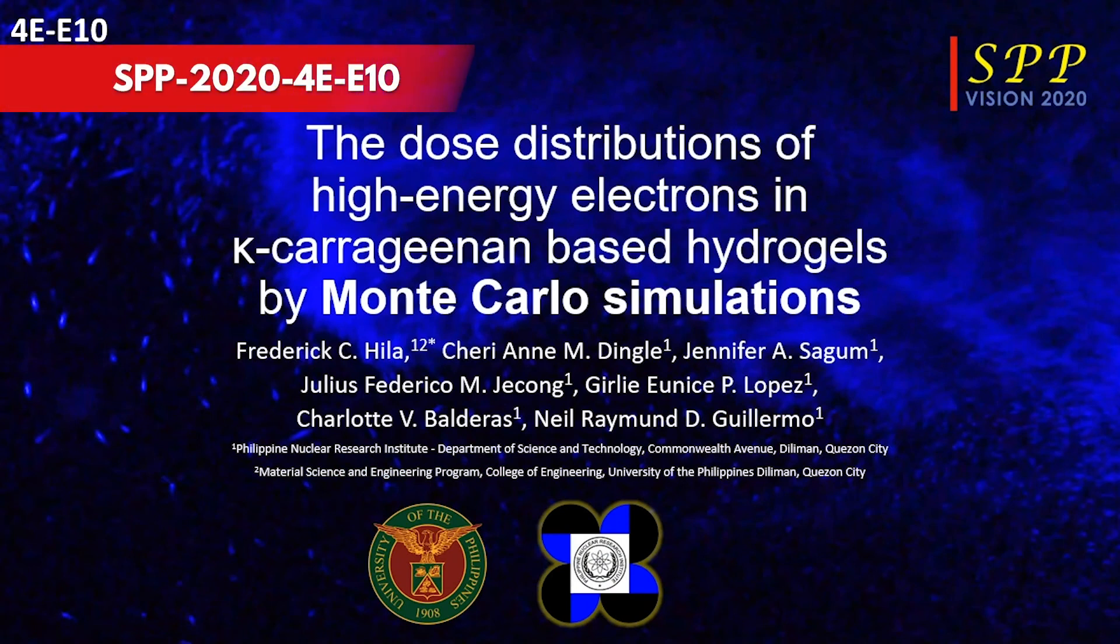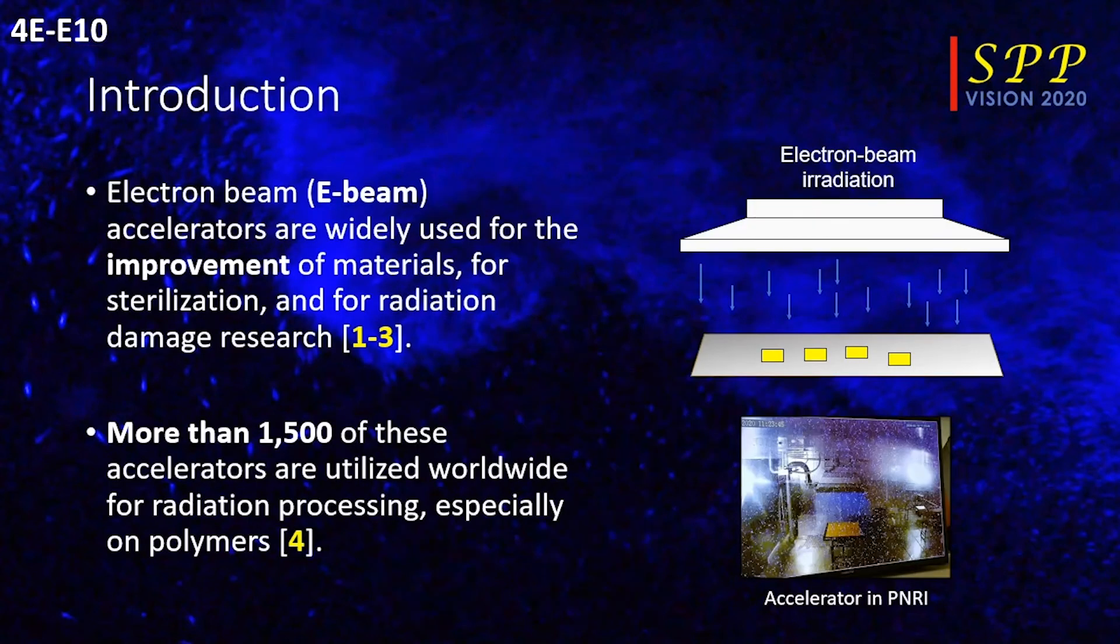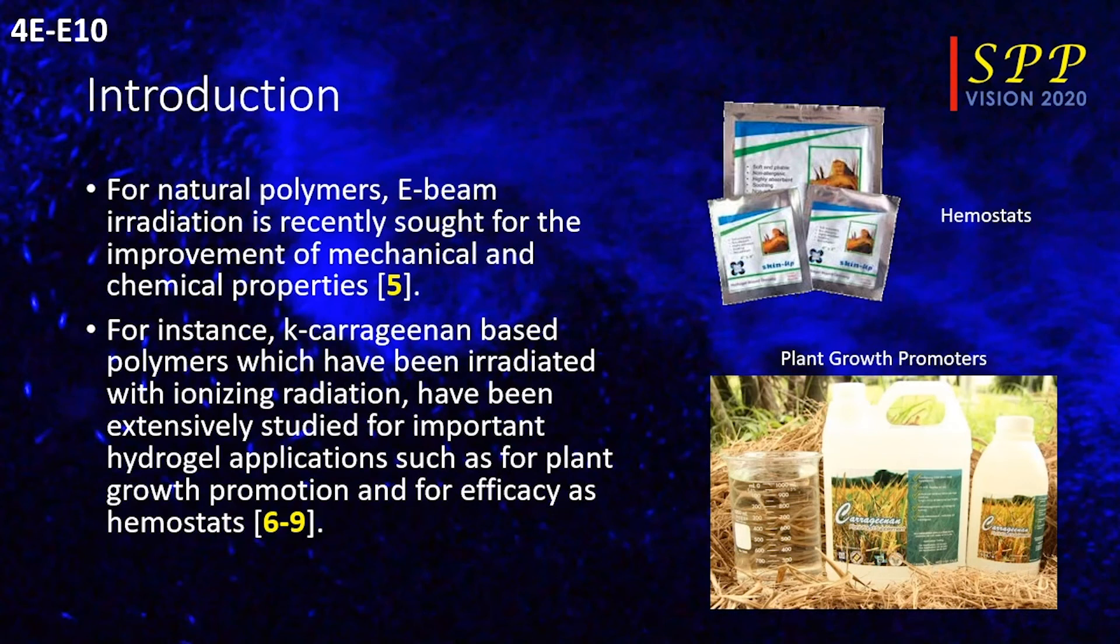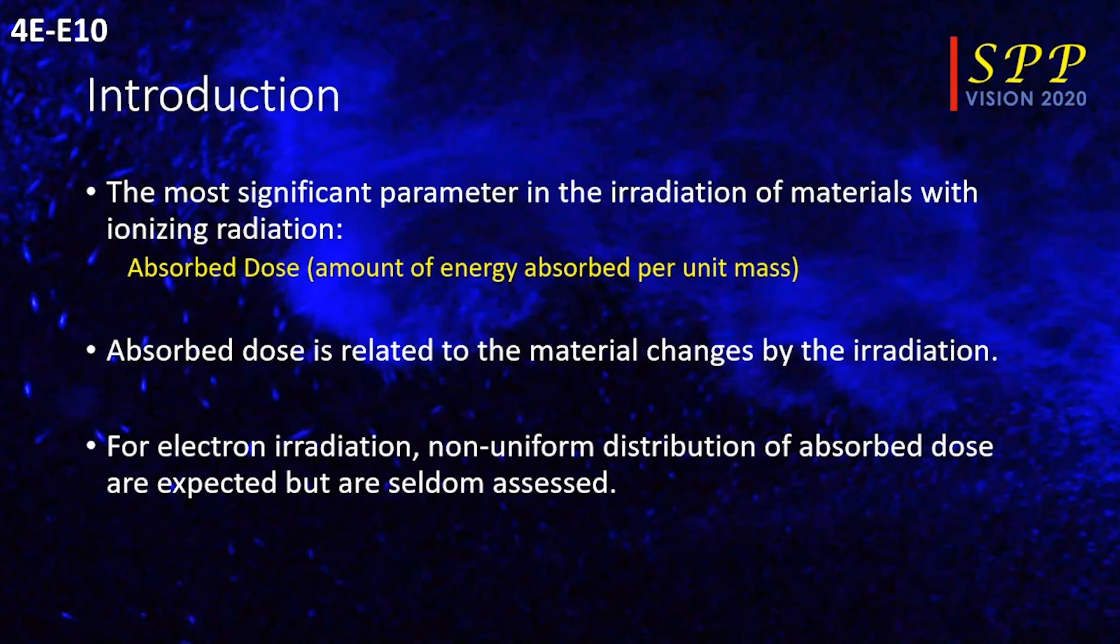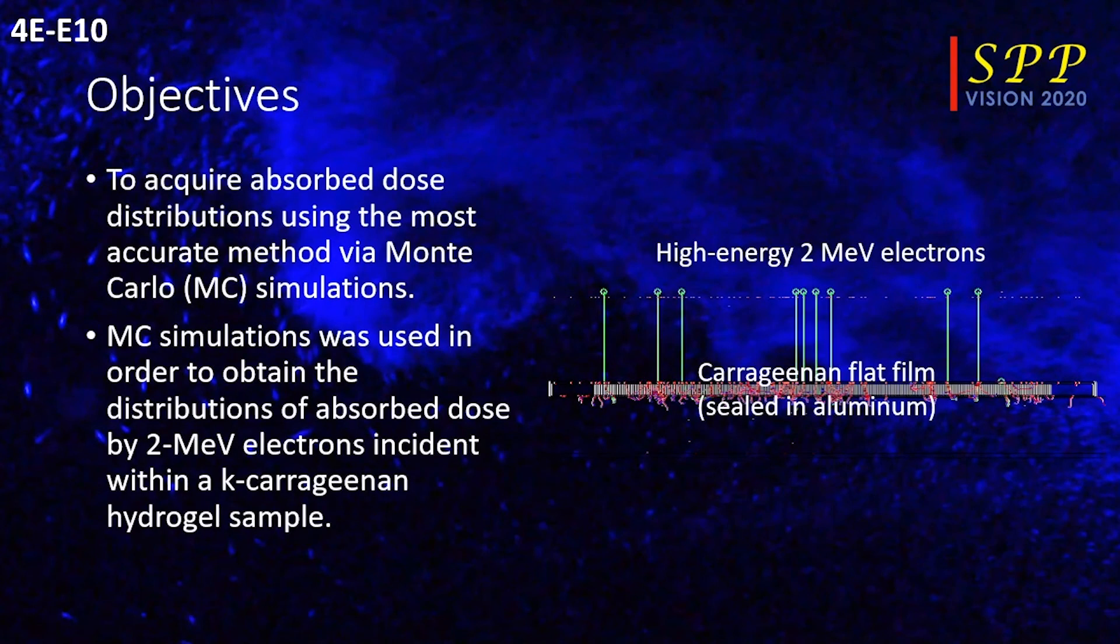Hello, I'm Frederick C. Gila, and I would like to report our study dealing with the Monte Carlo simulations of high-energy electrons incident in kappa-carrageenan-based hydrogels. Electron beams are widely used to induce changes in irradiated materials. For instance, in the Philippines, electron beam irradiation has led to the production of very novel products such as plant root promoters and hemostats, based on kappa-carrageenan. For irradiation of a material in electron beams, the most important parameter is the absorbed dose or the energy per unit mass. The purpose of this study is to get the absorbed dose distribution in kappa-carrageenan using Monte Carlo simulations. This is a very accurate method to determine absorbed dose distributions.